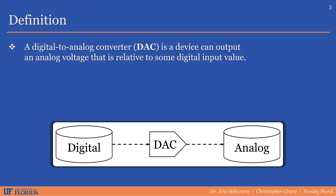A digital-to-analog converter, or DAC, is a device that can output an analog voltage that is relative to some digital input value. As you can see in the diagram, we take some digital value in the digital domain, use the DAC to convert it to an analog signal to the analog domain.